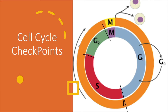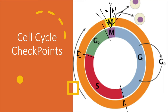Checkpoint one occurs between G1 and S phase. Checkpoint two occurs between S and G2. Checkpoint three occurs between metaphase and anaphase — so prophase, metaphase, then anaphase — and we have this third checkpoint between metaphase and anaphase. These are the three specific time spots within the cycle.